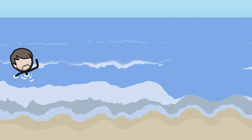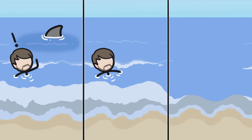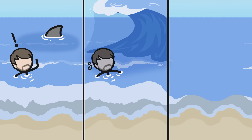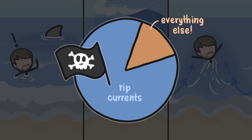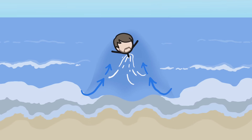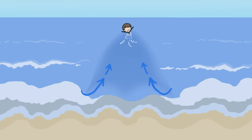You might think the most dangerous thing that can happen at a beach is a shark attack, or that the scariest thing might be a tsunami. But instead, rip currents — narrow channels of water that appear seemingly out of nowhere to pull unsuspecting swimmers out to sea — kill more beachgoers than all other causes combined. So why are they so deadly, and what can you do to avoid them?